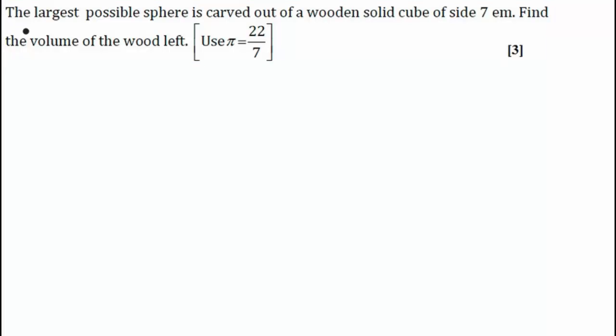Let's read out the question of volumes and surface area. The question says: the largest possible sphere is carved out of a wooden solid cube of side 7 centimeter. Find the volume of the wood left. So first we'll try to understand the diagram. There is a cube of side 7 centimeter.